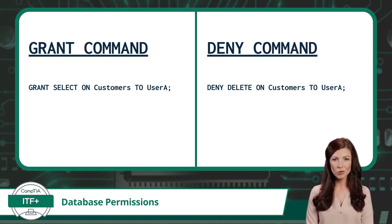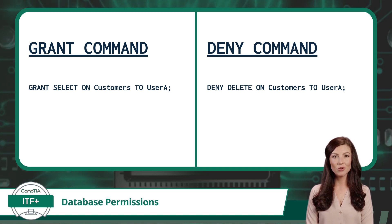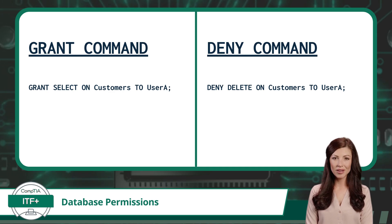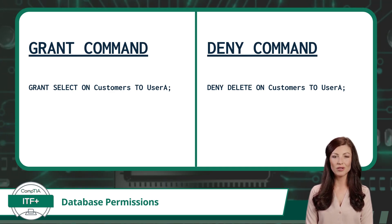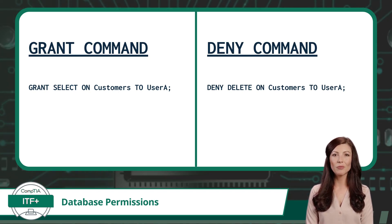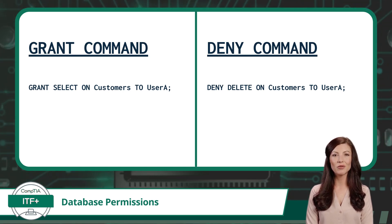First up, let's talk about granting permissions. When you want to give someone access to specific data in the database, you're essentially giving them a key to the vault. To do this, we use the Grant command. For example, if you want User A to only be able to view customer data, you would use the Grant command like the example on the left. This command would grant permission for User A to use the Select command on the Customers table.